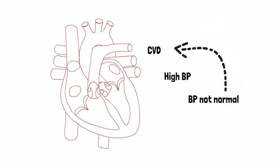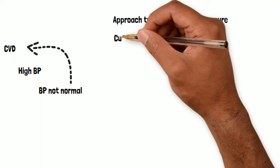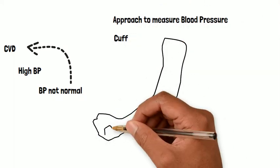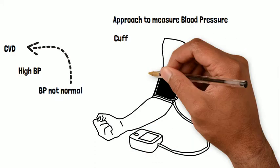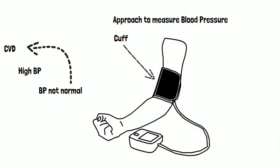Hence, measuring your blood pressure is very important. The standard approach to measure blood pressure is using a cuff. If you have gone to a hospital, doctors might have slipped your arm into a cuff. The doctor inflates and deflates this cuff to measure your blood pressure. This method is called oscillometry.